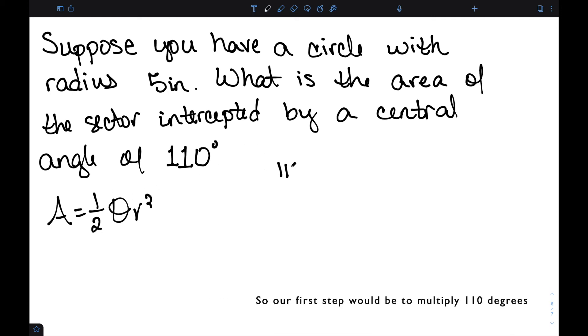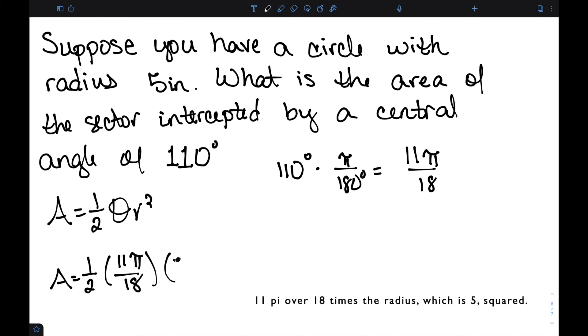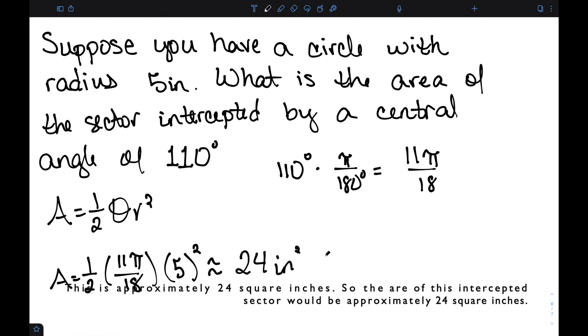So our first step would be to multiply 110 degrees by pi over 180 degrees to get 11 pi over 18. So my area is one half, 11 pi over 18, times the radius, which is 5, squared. And this is approximately 24 square inches. So the area of this intercepted sector would be approximately 24 square inches.